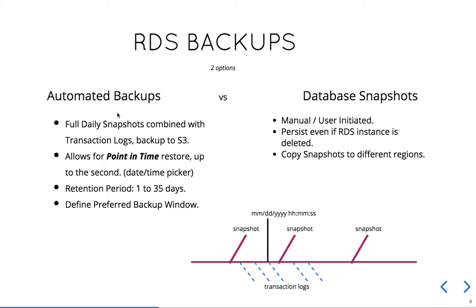This particular backup method allows us to do a point-in-time restore up to the second. In the diagram, imagine a timeline where we're taking daily snapshots, and in between those snapshots we are backing up transactional logs. We can use a date picker to choose the exact point in time we want to restore to — a very powerful feature.